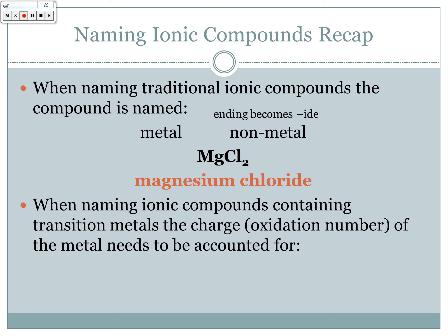When naming ionic compounds containing transition metals, the charge or oxidation number of the metal needs to be accounted for. For example, with iron and chlorine, iron can have multiple different charges, so we need to indicate which type of iron was used. Since chlorine is 1− and there were three of them used, iron must have donated three electrons and become 3+. So we write it as iron(III) chloride, where the Roman numeral III indicates the 3+ charge on the iron.